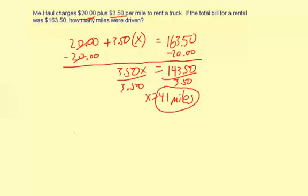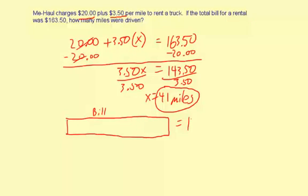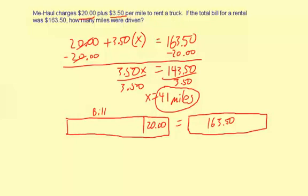As a more visual way to solve this, let's say this bar represents the total bill. We have two parts: this is $163.50 total. We know $20 is the base cost, and then we have the mileage part, which is $3.50 times the number of miles — put a question mark there, or X, which is really what we're doing with the equation.